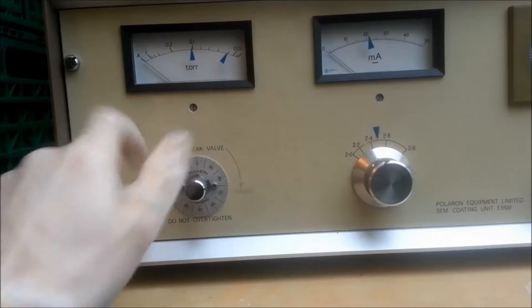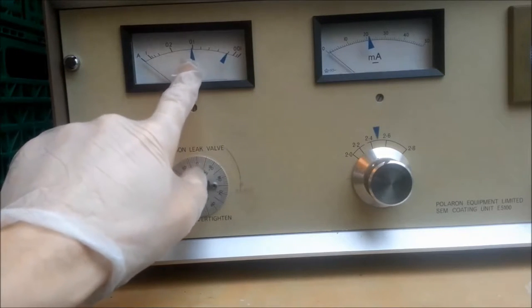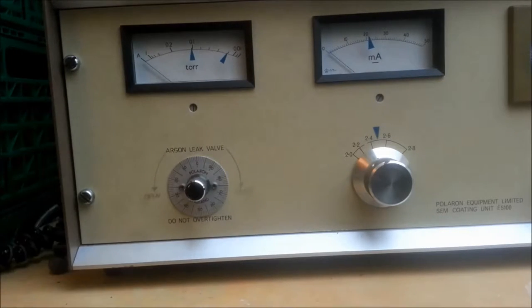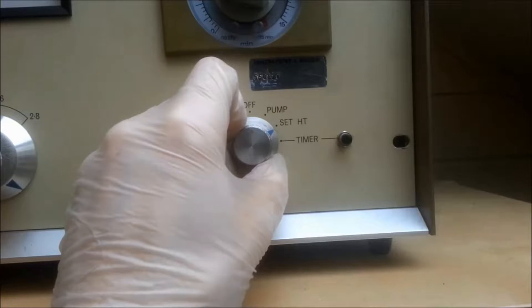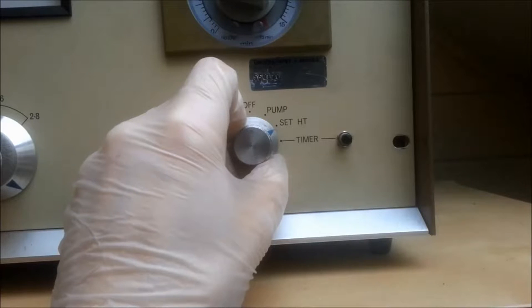There's a small needle valve that connects the argon supply to the chamber. And the pressure is read off in torr on this analog display. The next function is set high T or high tension, which means higher voltage at a low current for those unfamiliar with the term.